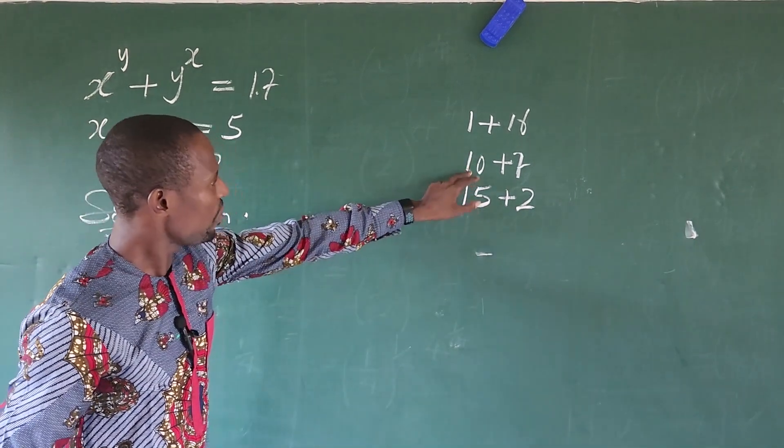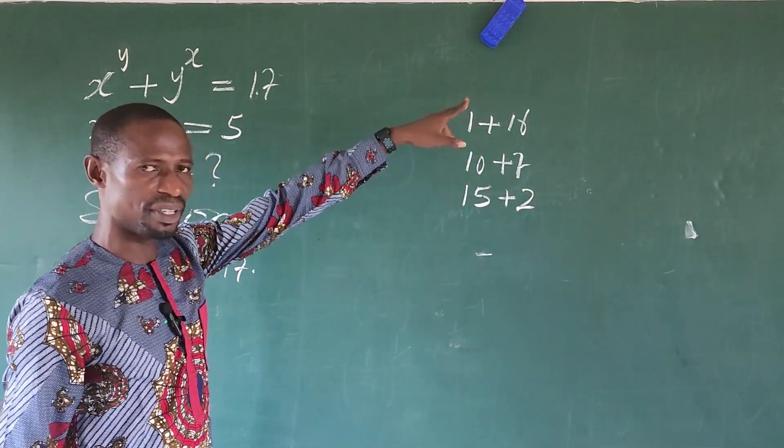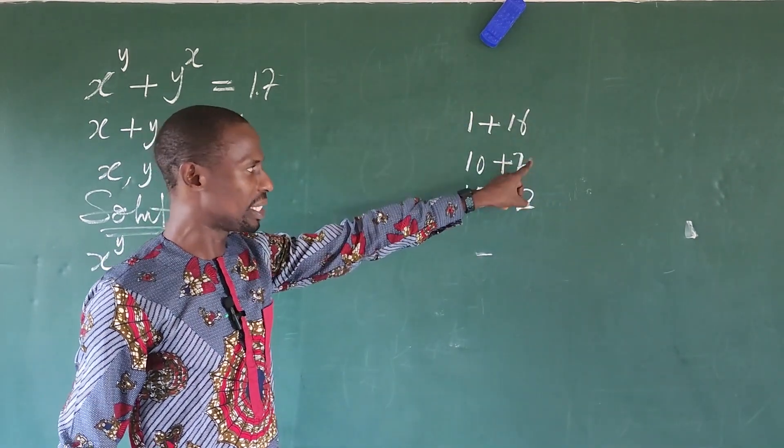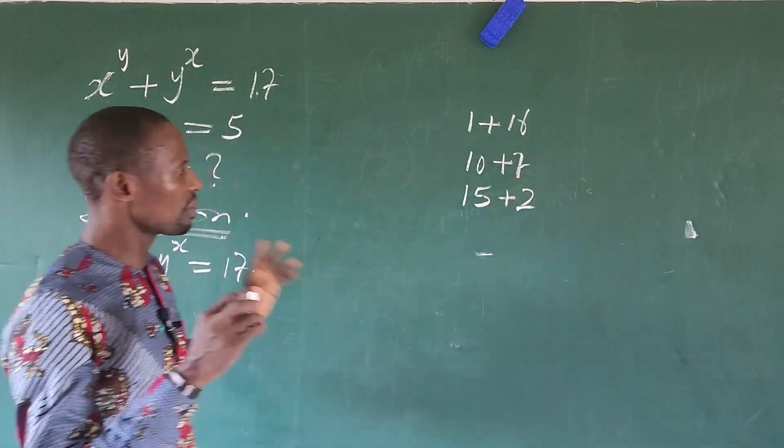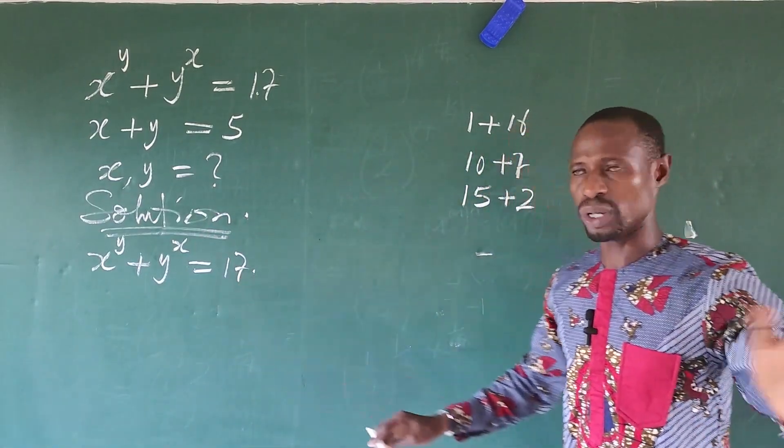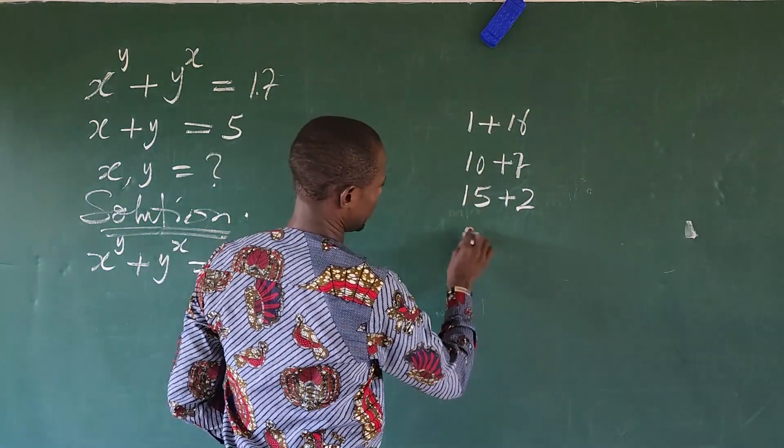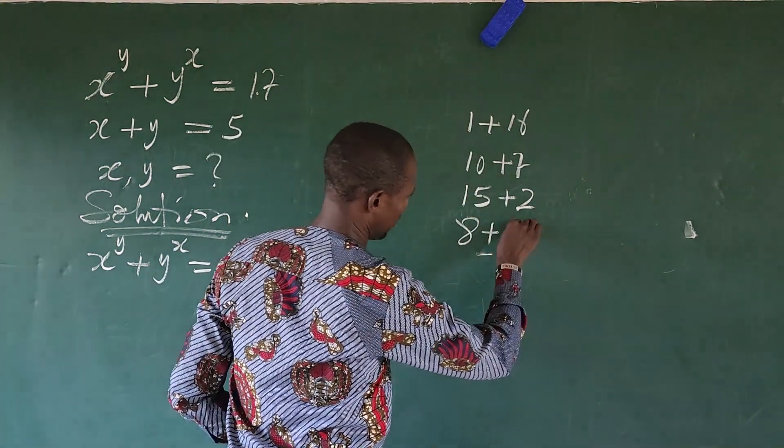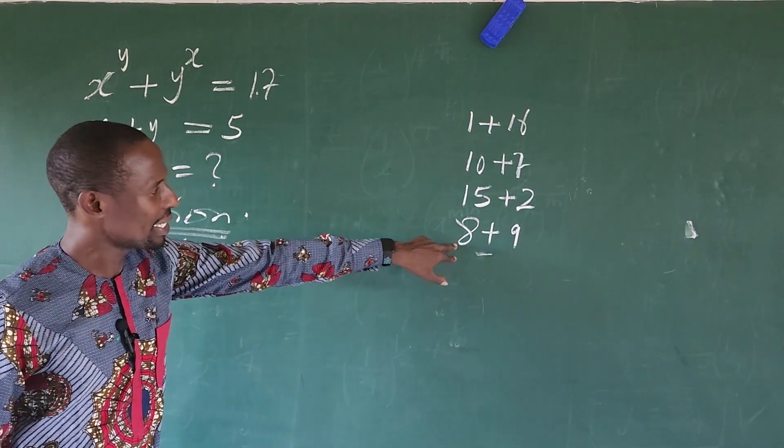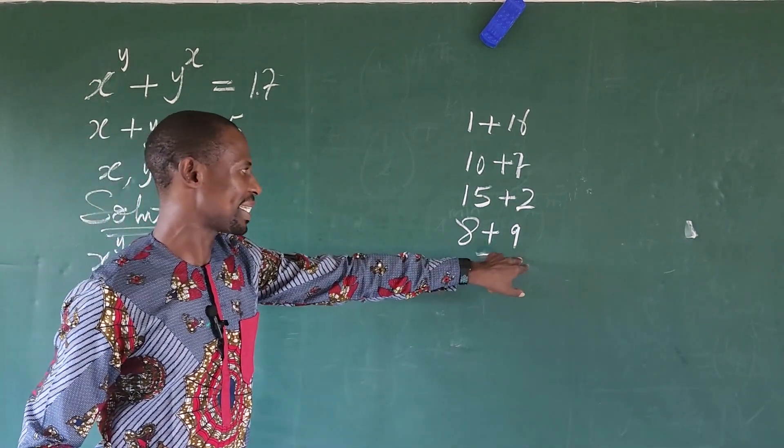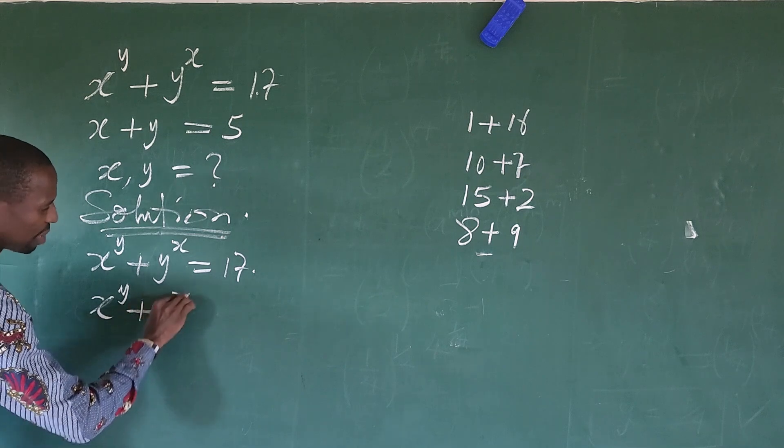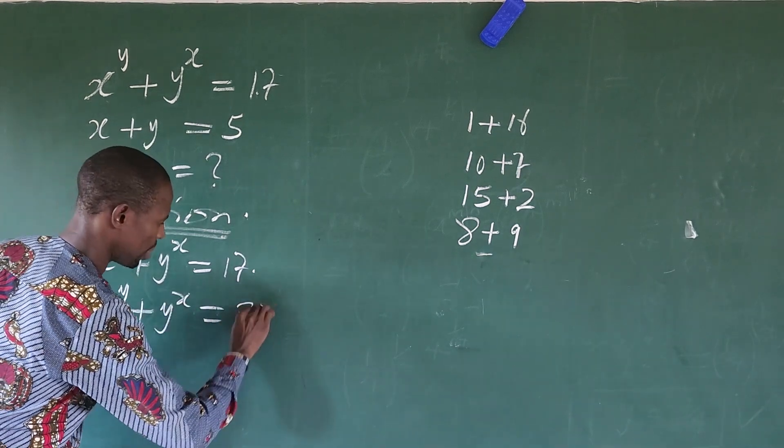Because here, we cannot rewrite this by putting a given number here, raise it to a given number to give us 10. We cannot write 7 as a number, then raise it to another number to give us 7. Let's look at two numbers that we can express in terms of their powers and their summation will give us 17. What comes to mind, here we're going to have 8. We're going to have 8 plus 9. 8 plus 9 will give us 17.